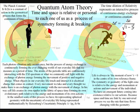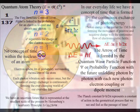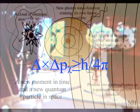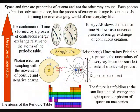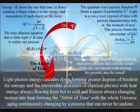At the smallest scale of the process, this energy is represented by the spontaneous absorption and emission of photon energy, relative to the atoms of the periodic table. It is this process of energy exchange that forms the ever-changing world of our everyday life that we see and feel as a period of time. We have photon energy cascading down from the sun, forming greater degrees of freedom for entropy or disorganization, forming the passage or continuum of time.